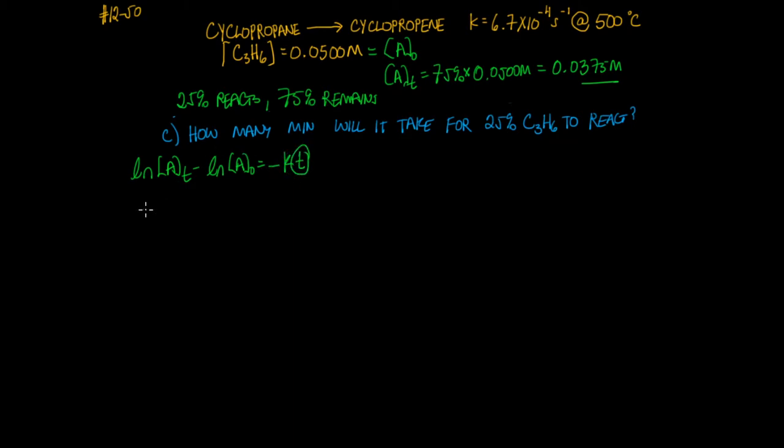You can solve for t by dividing both sides by the negative rate constant. And you go ahead and plug in some of these values. So at time t, we have this concentration over here, 0.0375.